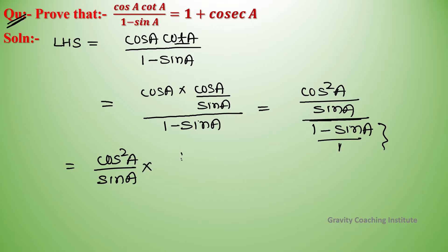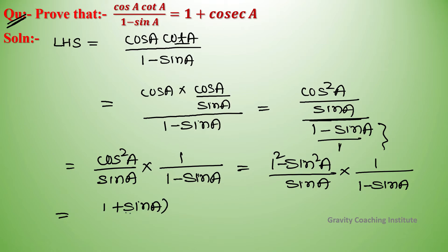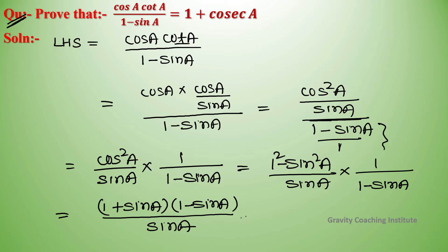We use 1 minus sin squared A in the numerator, so we get 1 minus sin A into 1 plus sin A upon sin A into 1 minus sin A. Here, the 1 minus sin A terms cancel out.